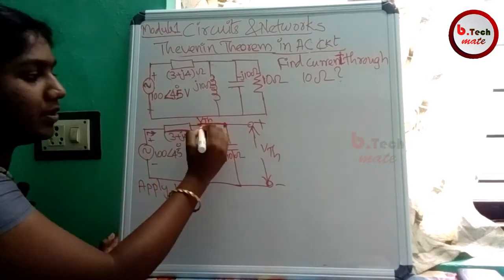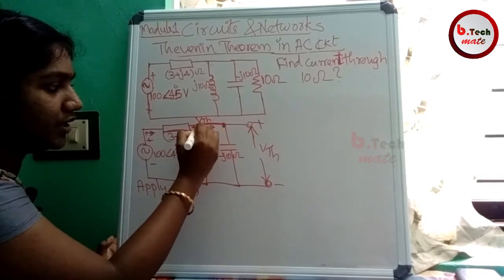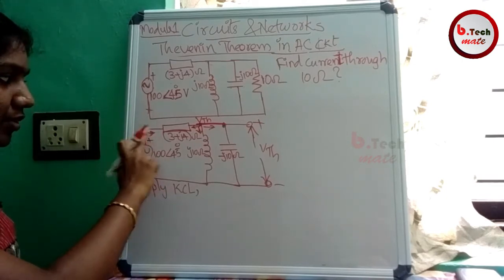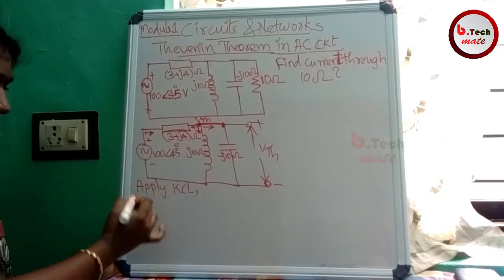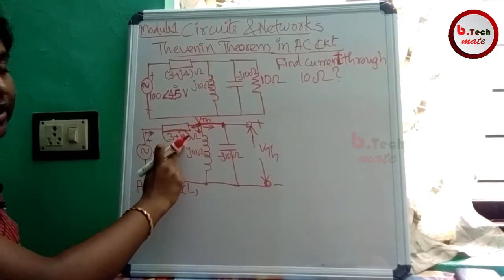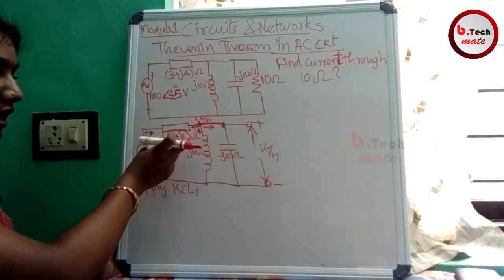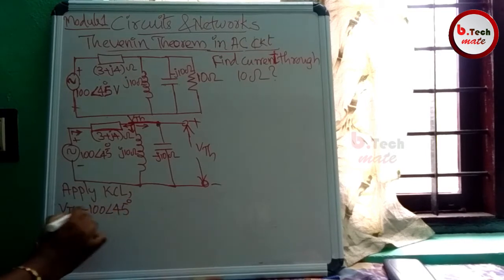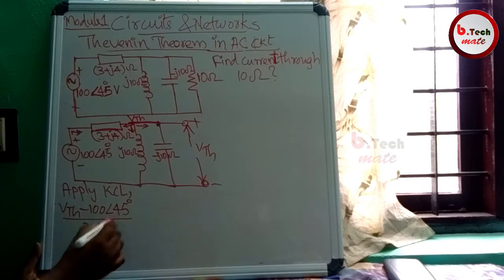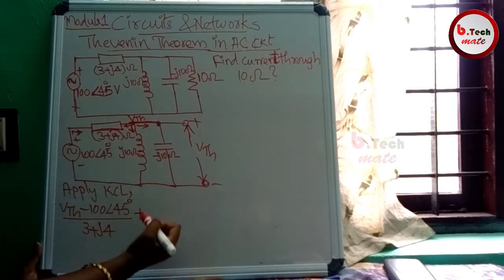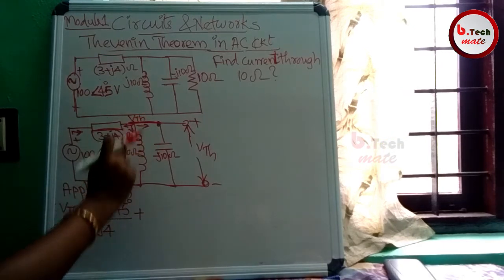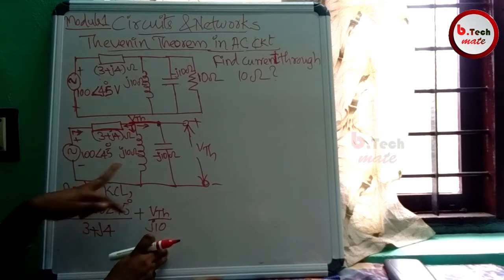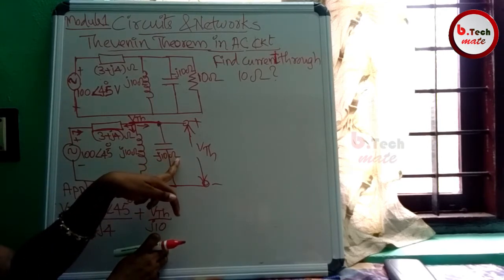E = 100 angle 45 degrees, the AC voltage is positive. So the current is in the E direction — that is the opposite direction. That is the R angle voltage. 3 plus J4 is active: 3 plus J4 equals VTH minus 100 angle 45 divided by J10, with 3 plus J10 active in the index.